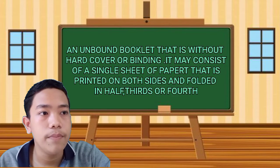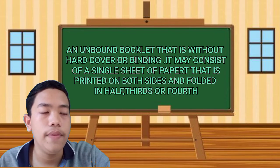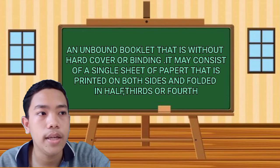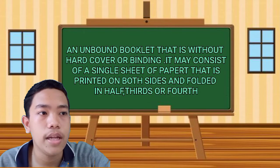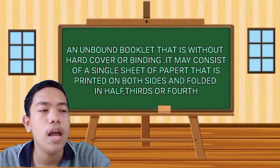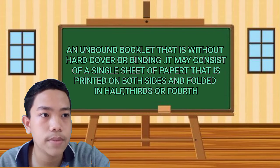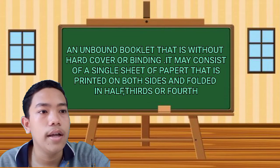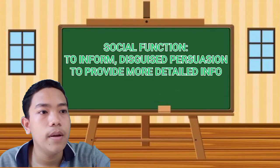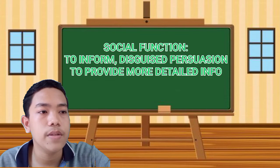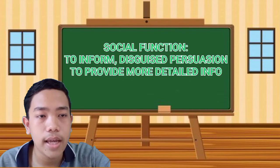And the last is pamphlet. A pamphlet is an unbound booklet that is without a hardcover or binding. It may consist of a single sheet of paper that is printed on both sides and folded in half, in thirds, or in fourths. The social function of a pamphlet is to inform, to persuade, and also to provide more detailed information.